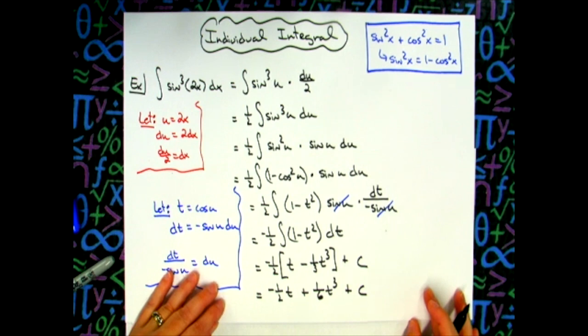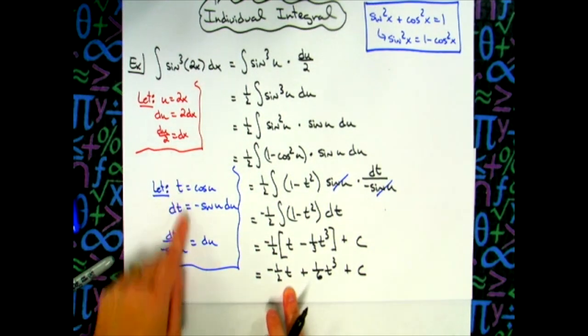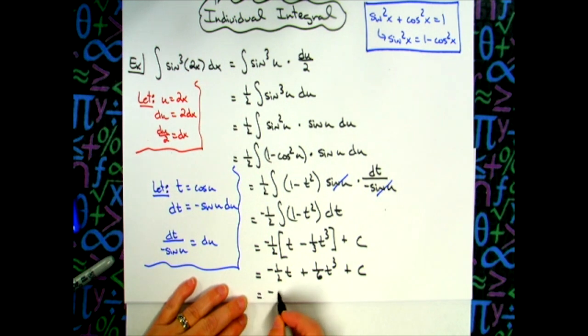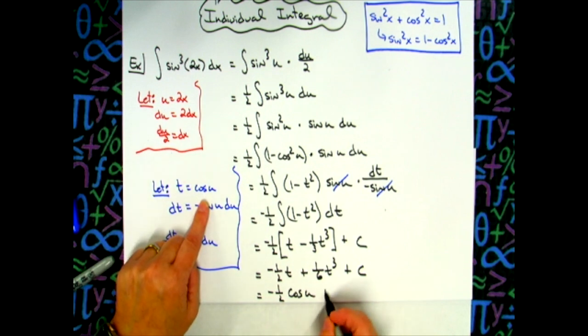Final step then there would be to now replace my t. And then I'll have negative one half, replace t with cosine u, plus one sixth, and then cosine to the third u, plus c.